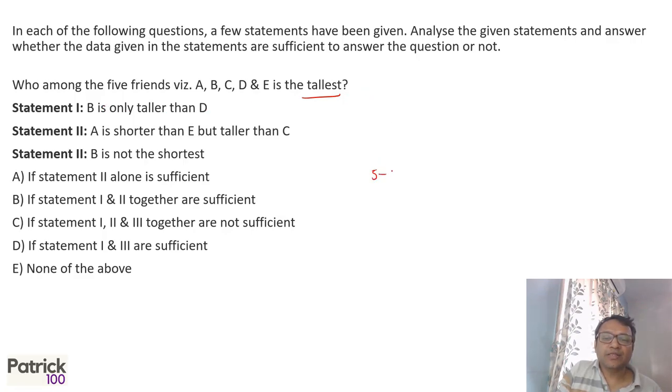than D, which means fifth is D, fourth is B, because B is only taller than D, no one else. So fourth is B. A is shorter than E but taller than C, so we have E, A, C.